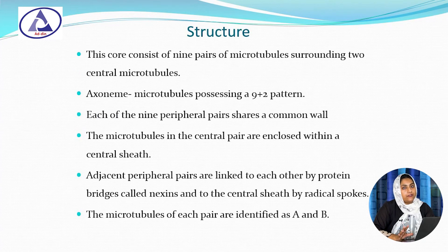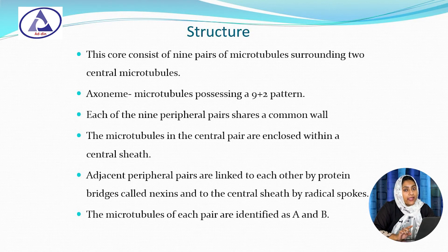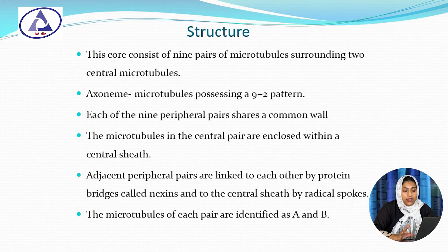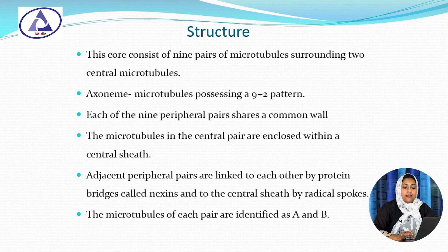Within the structure of cilia, cilia are composed of 9 pairs of microtubules. Within the 9 pairs of peripheral microtubules, there is a presence of 2 central pairs of microtubules, surrounded by a central sheath. This pattern is known as the axoneme, that is the 9 plus 2 pattern. Each of the 9 peripheral pairs shares a common wall. Adjacent peripheral pairs are linked to each other by protein bridges called nexin, and to the central sheath by radial spokes.